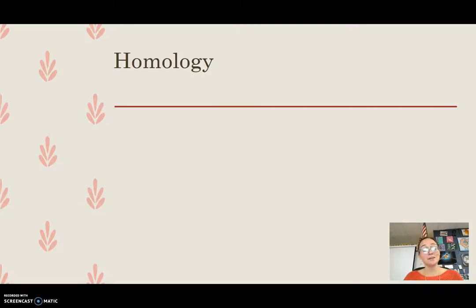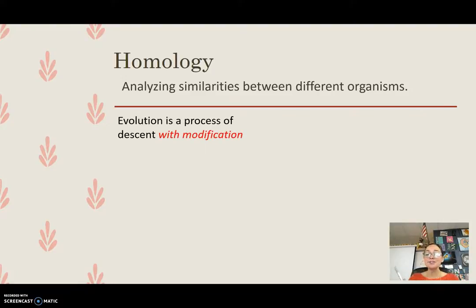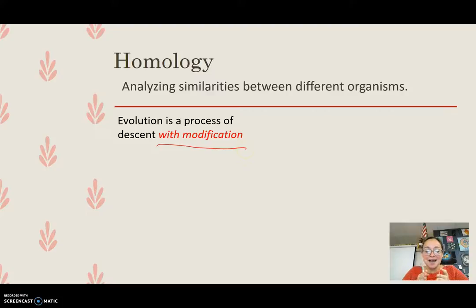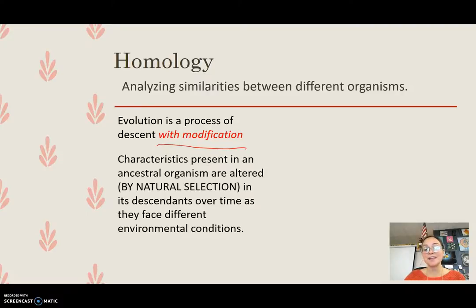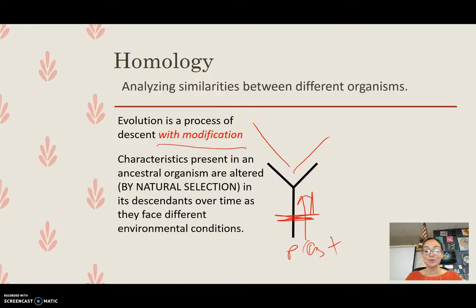Another piece of evidence is homology — analyzing similarities between different organisms. Evolution is a process of descent with modification, meaning species evolve over time with modifications. Characteristics present in an ancestral organism are altered by natural selection in its descendants over time.